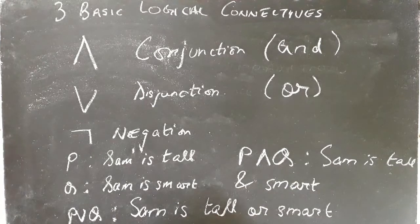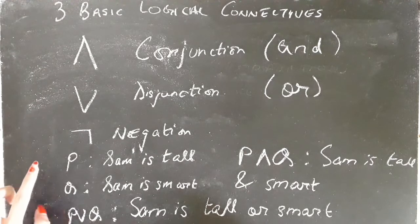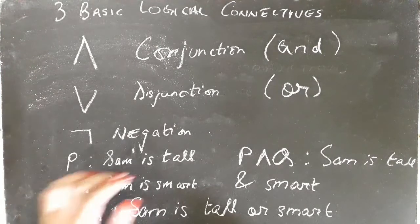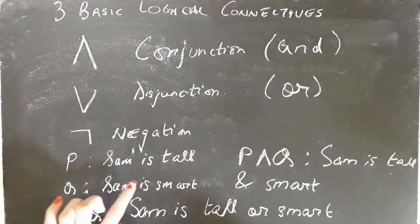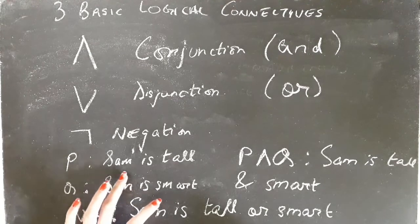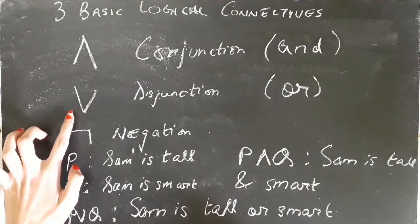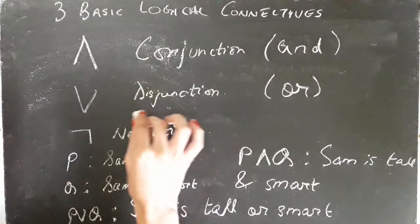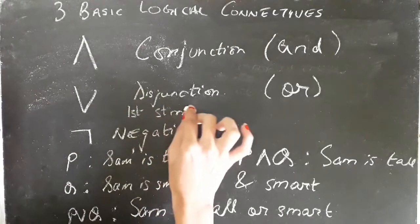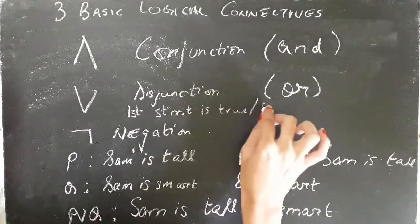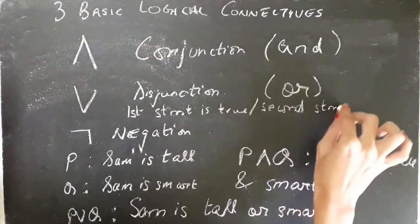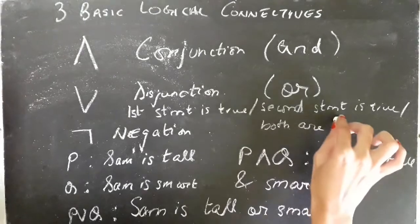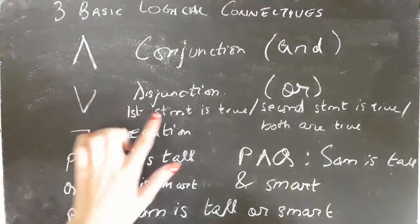For P and Q to occur, it is necessary that both P is true and Q is true — Sam should be both tall and smart. However, for P or Q to occur, either Sam can be tall, or he can be smart, or he can be both tall and smart. So the disjunction connective can be broken down into three parts: first statement is true, second statement is true, or both are true.